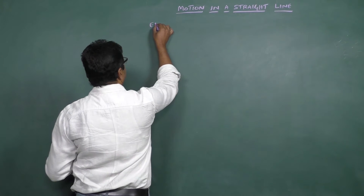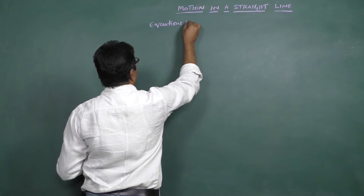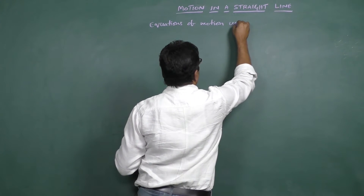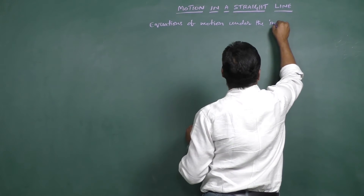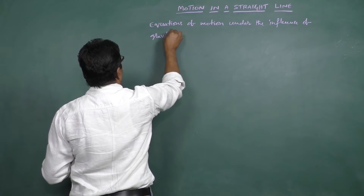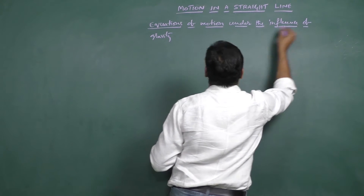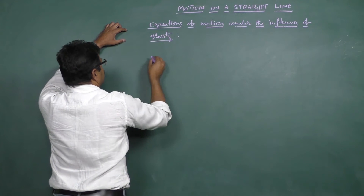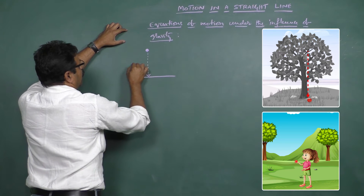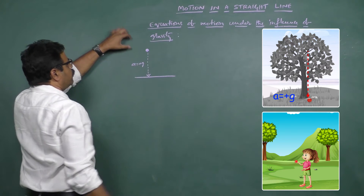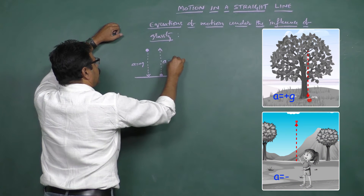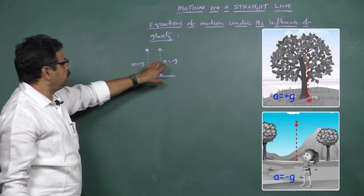Now we look at how the equations of motion vary under the influence of gravity. Here, in the case of a body moving with reference to gravitational influence, when a body is coming down, acceleration is due to the gravitational pull, therefore 'a' will become plus g. Whereas in the case of a body moving in an upward direction, the acceleration will become minus g.